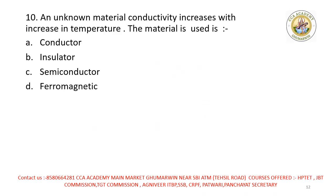Next question: an unknown material — conductivity increases with increase in temperature. The material is? Options: conductor, insulator, semiconductor, ferromagnetic. Right option is semiconductor. Conductivity of semiconductor is directly proportional to temperature — jaise jaise temperature increase karo, semiconductor mein current easily flow karna start kar deta hai.